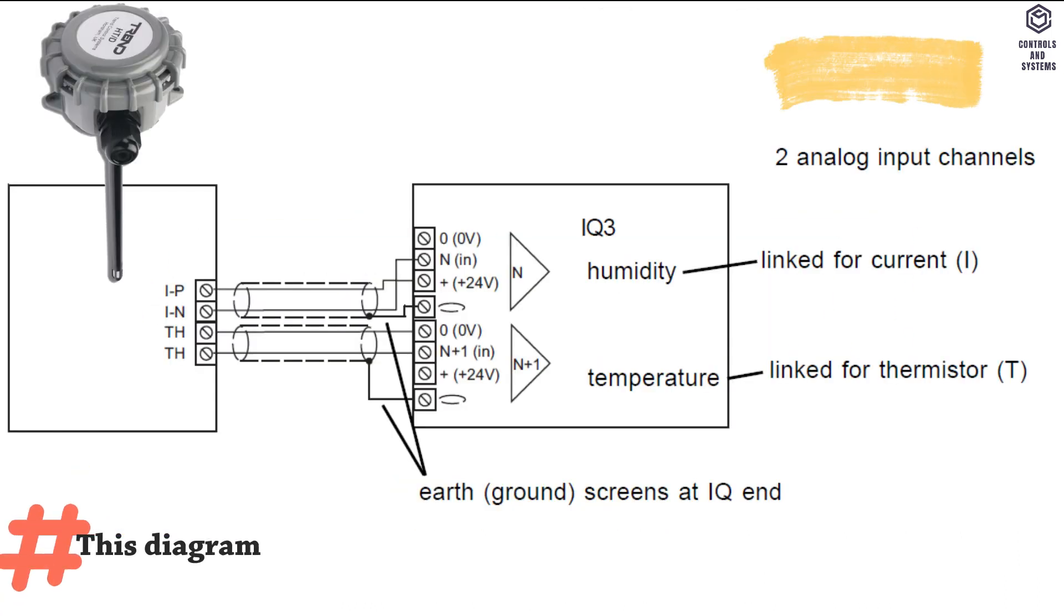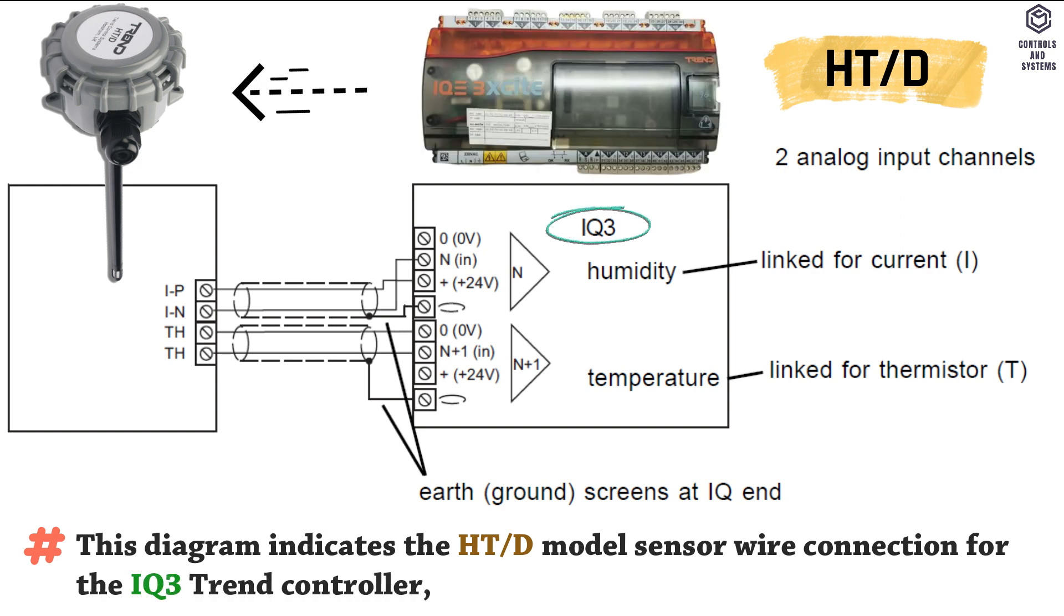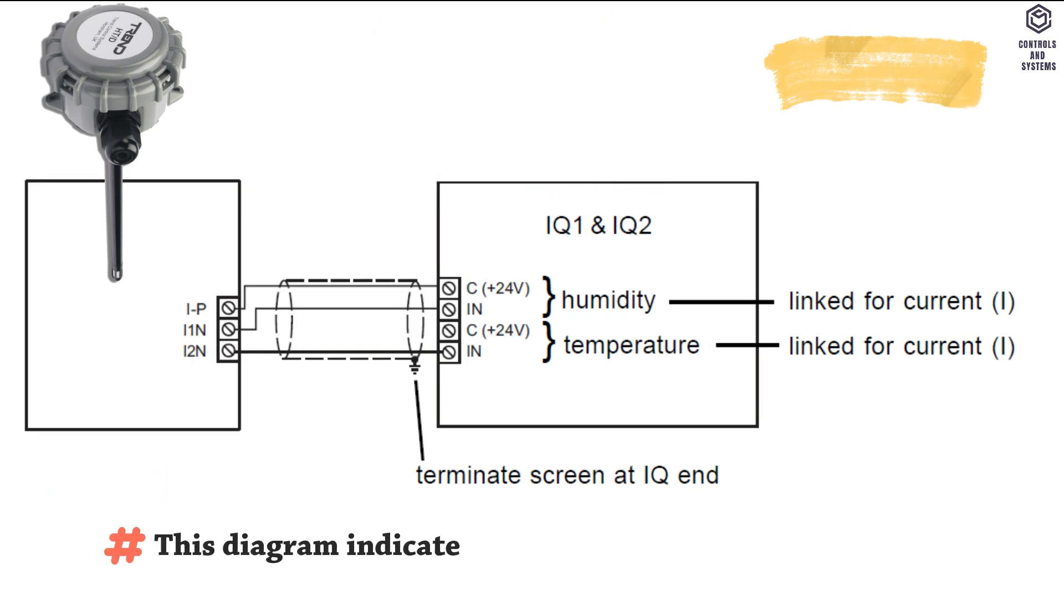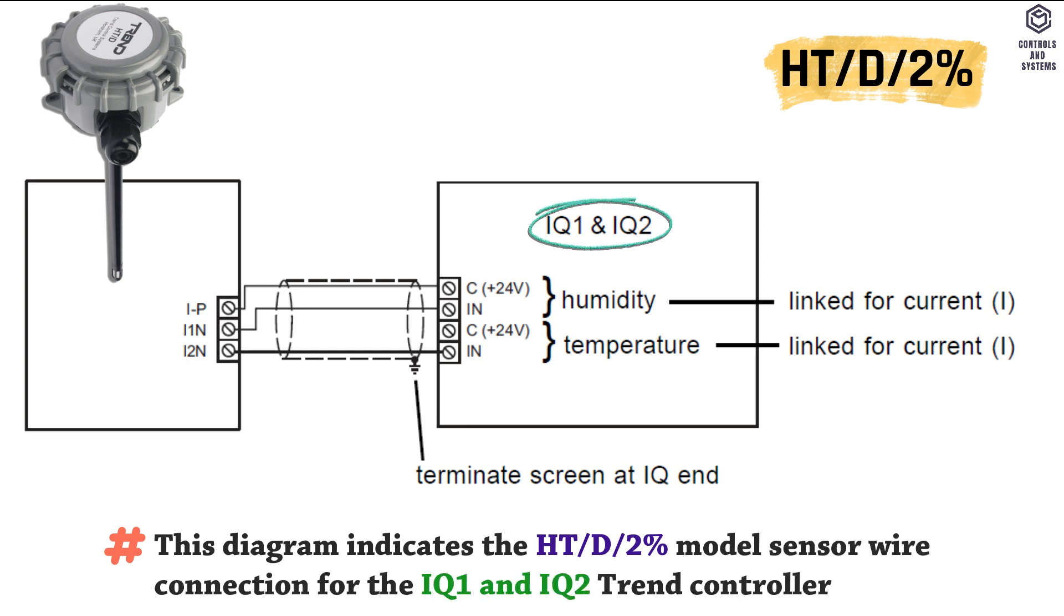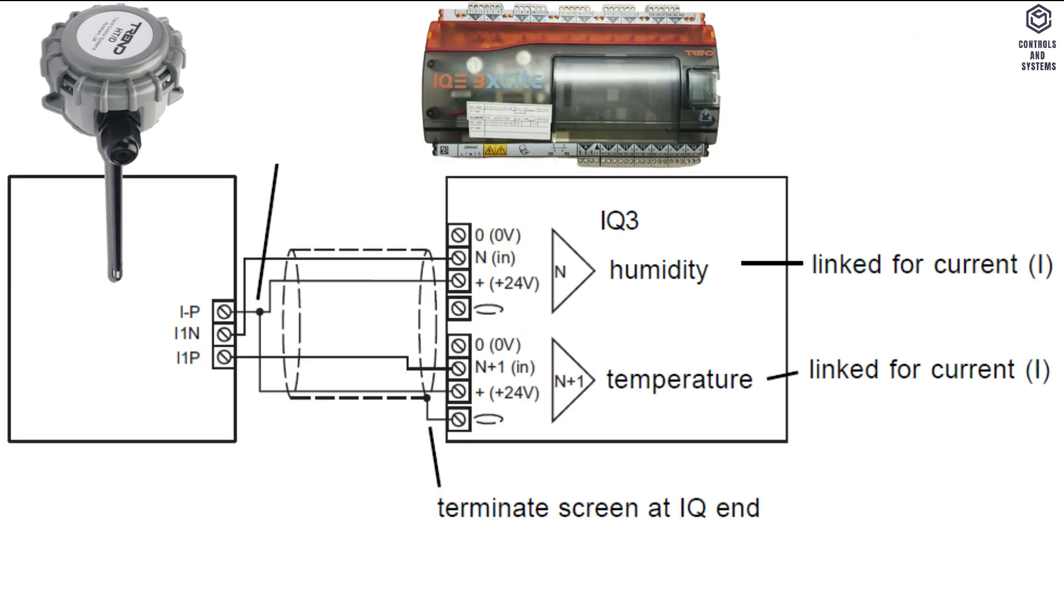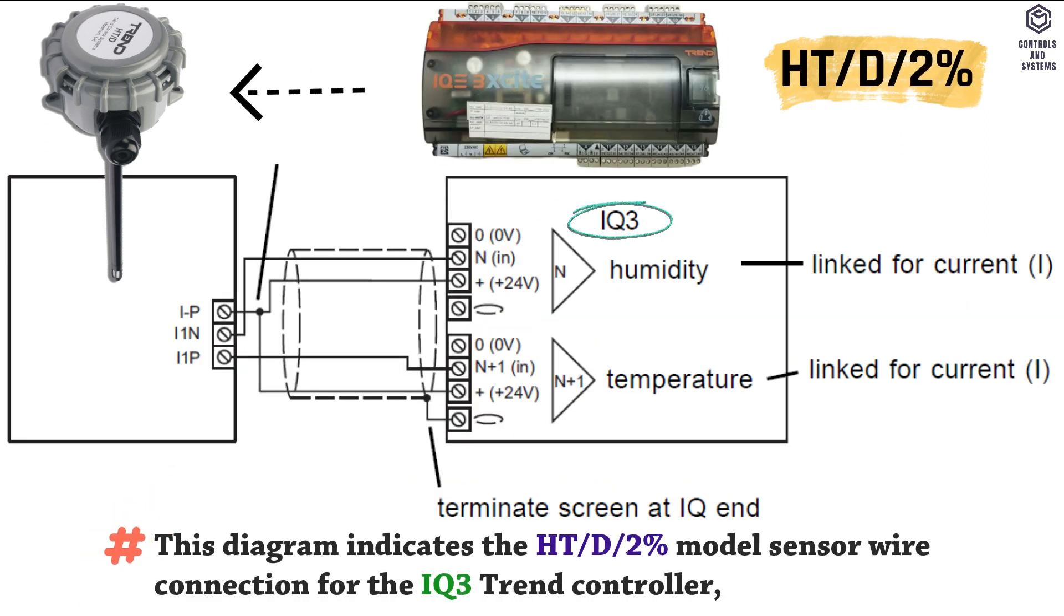Sensor wiring: This diagram indicates the HTD model sensor wire connection for the IQ3 Trend controller. Connection for the IQ1 and IQ2 Trend controllers. This diagram indicates the HTD 2% model sensor wire connection for the IQ1 and IQ2 Trend controllers. Connection for the IQ3 Trend controllers.